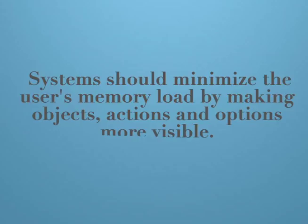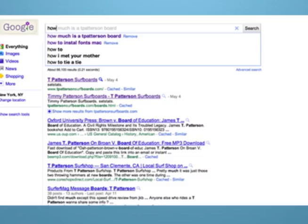Recognition over recall — or wait, what was that already? This principle states that systems should minimize the user's memory load by making objects, actions and options more visible. The user should not have to remember information but should be helped with recognizing what they want.